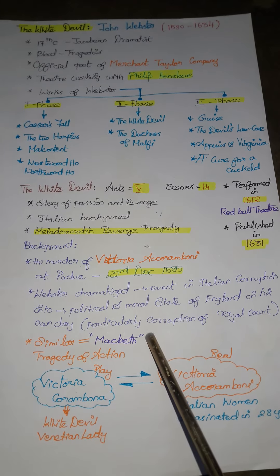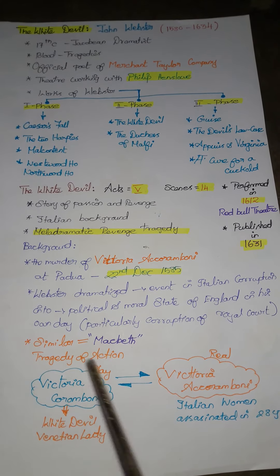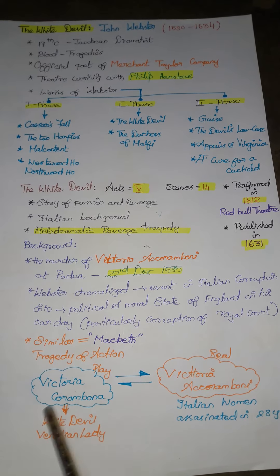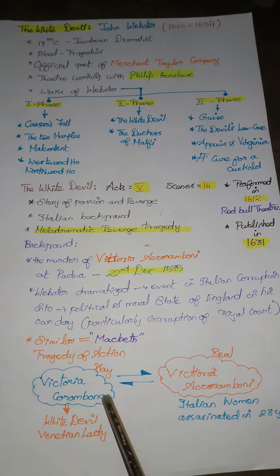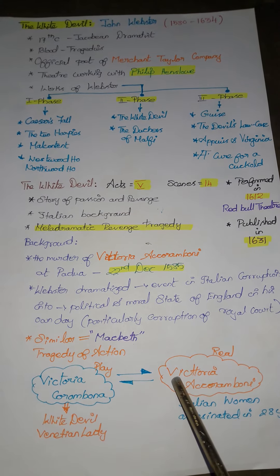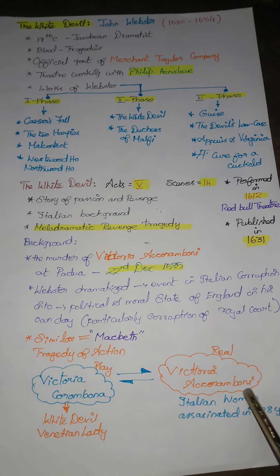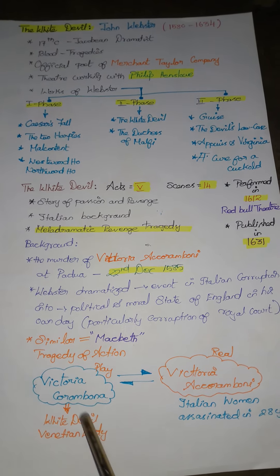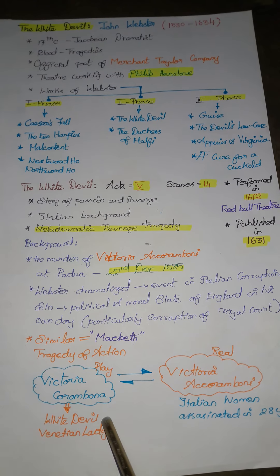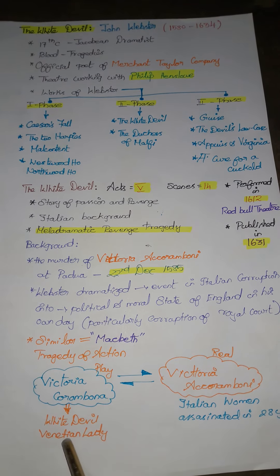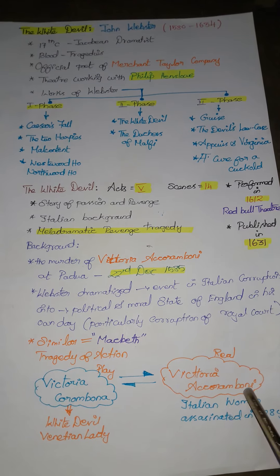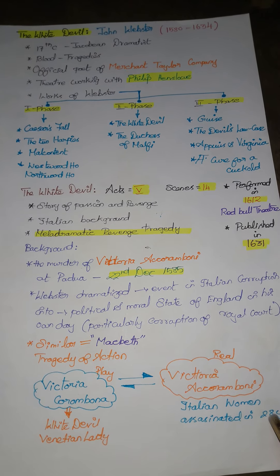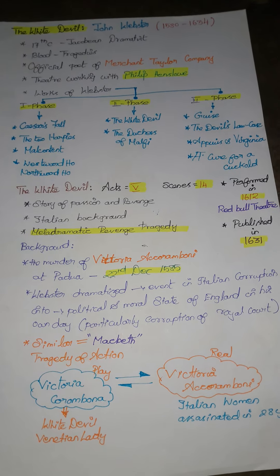This work is similar to Macbeth; it is a tragedy of action. The protagonist's name is Victoria Akrombani, and she has been a real person as well as a character in the play. She has been considered as a white devil and has been portrayed as a Venetian lady. In actual, Victoria is an Italian woman assassinated at her age of 28 years. We will know more about it in the next video.